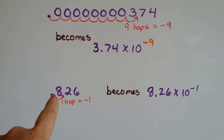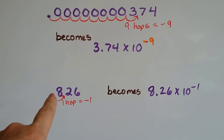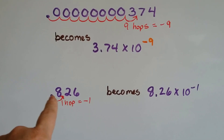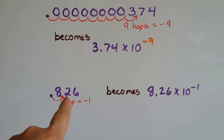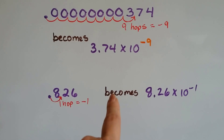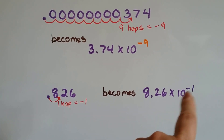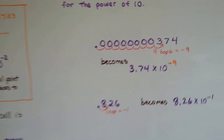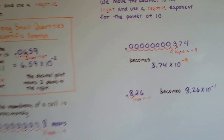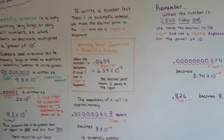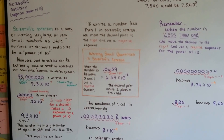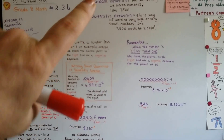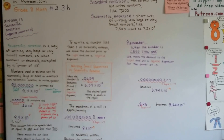And if we just want to move it over one place — if it's in front of the eight and we want to write it in scientific notation — we can just move it over one hop. That's a negative one. That becomes 8.26 times ten to the negative one. So that's writing in scientific notation with negative powers of ten. We're going to talk about the negative powers of ten and putting them back into standard notation.